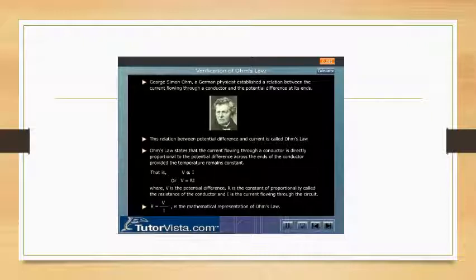Ohm's law states that the current flowing through a conductor is directly proportional to the potential difference across the ends of the conductor provided the temperature remains constant. That is, V is directly proportional to the current flowing through the circuit, or V is equal to RI, where V is the potential difference, R is the constant of proportionality called the resistance of the conductor, and I is the current flowing through the circuit. R is equal to V by I is the mathematical representation of Ohm's law.